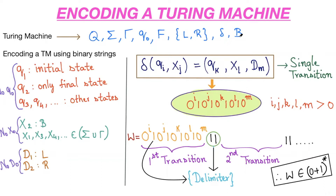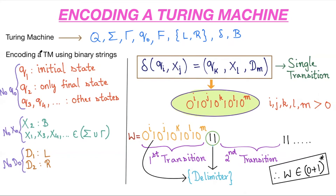There is a special symbol called the blank symbol on the tape, which acts as a delimiter. We are going to see how to encode a Turing machine. We are going to encode a Turing machine using binary strings. Here I am defining a set of states: Q1, Q2, Q3, Q4, up till Q-i, where I am assuming Q1 as the initial state.